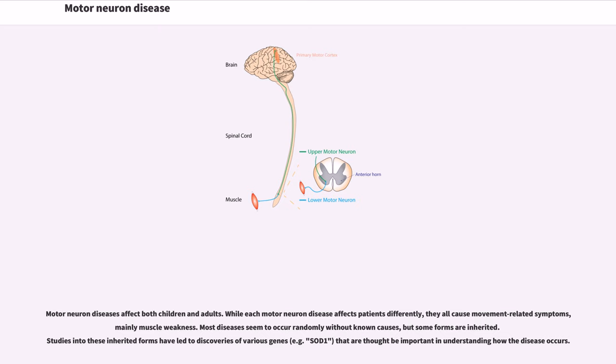Most diseases seem to occur randomly without known causes, but some forms are inherited. Studies into these inherited forms have led to discoveries of various genes, for example SOD1, that are thought to be important in understanding how the disease occurs.